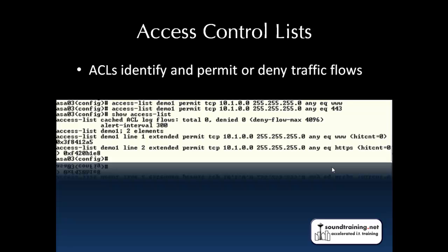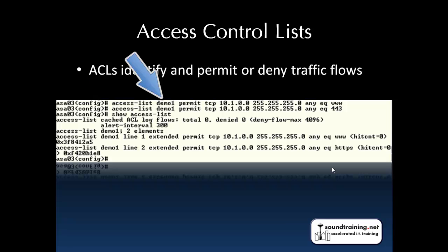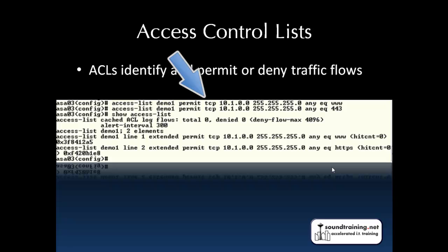Here's an example of configuring an access control list. We start with the access-list command, then we give it a name — demo1 — we can also call it a number, similar to numbered lists on a router. Then the permit or deny condition; in this case, we're going to permit. Next, the protocol type — in this case TCP, but we could do UDP, IP, or ICMP, for example.